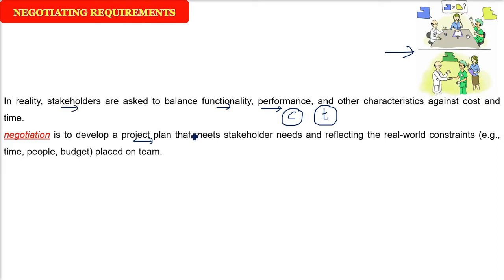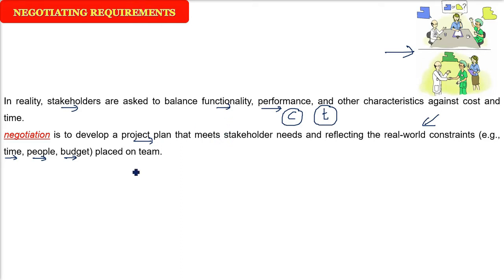We want to complete the requirements, but we also have to know that in the real world there are certain constraints — time is limited, the people you are working with are limited, and the budget is also limited or well-constrained. So in all these constraints, developing a very good project plan that meets the user's needs is negotiation: in this money, in this time, this can be done. The best negotiation is always striving for, looking for, a win-win condition for all the parties involved.